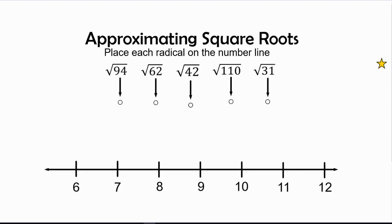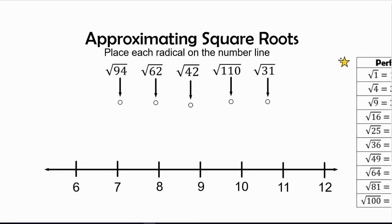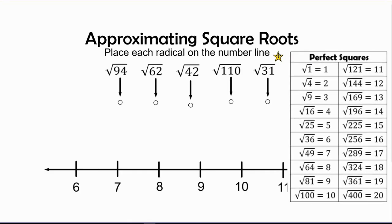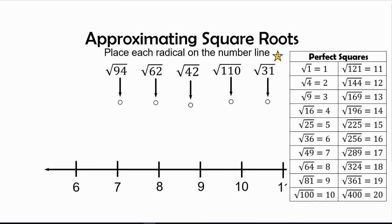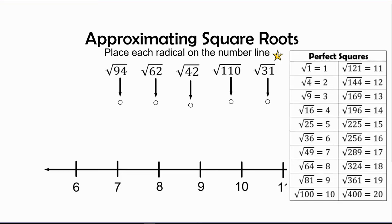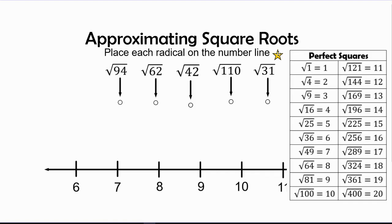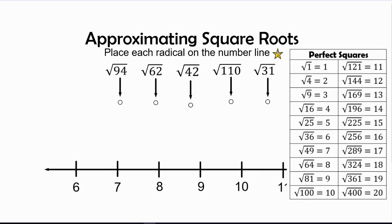What we need to do is remember our perfect squares. Now if you do not necessarily remember what your perfect squares are, we can refer back to our table that we've created in a previous video. You can see right there 1 times 1, so radical 1 equals 1. Radical 4 equals 2. 3 times 3 is 9, so square root of 9 equals 3, and so on.